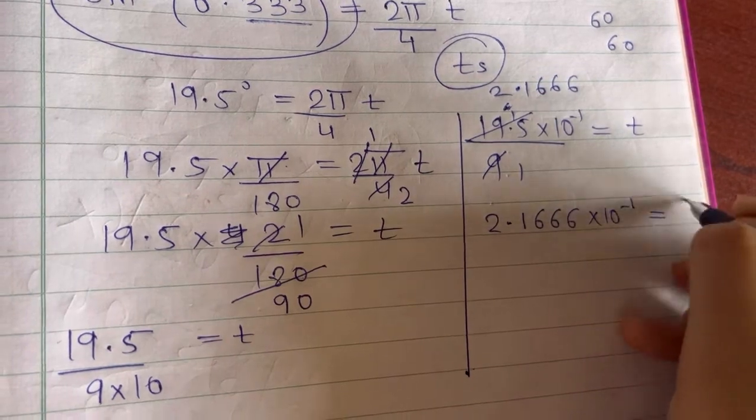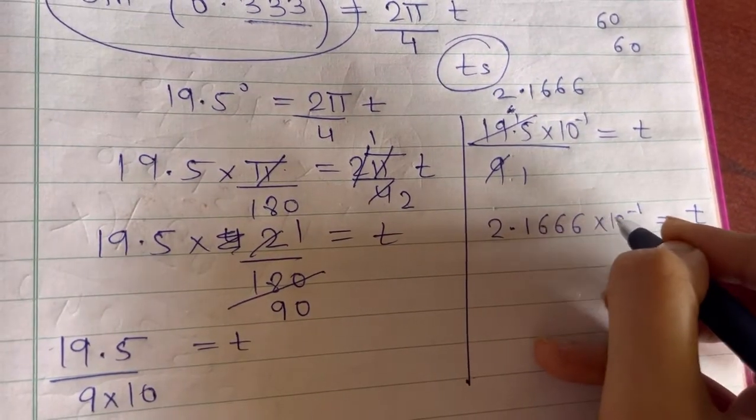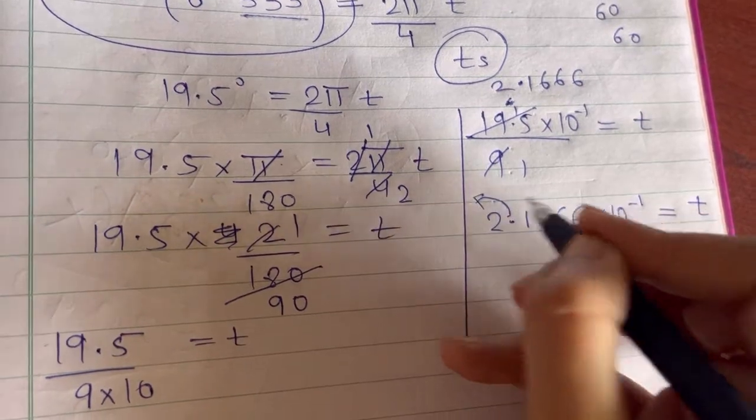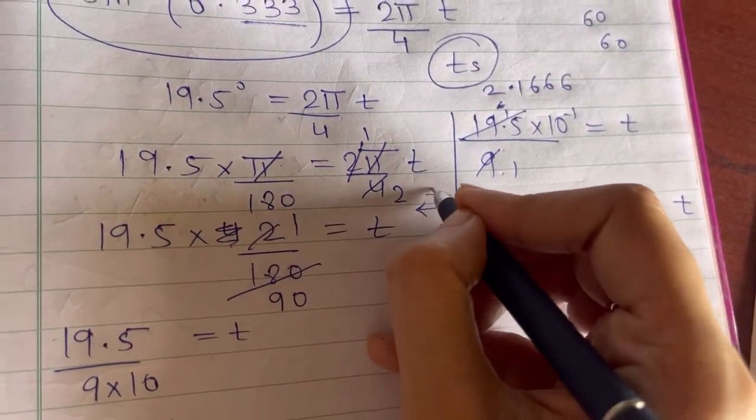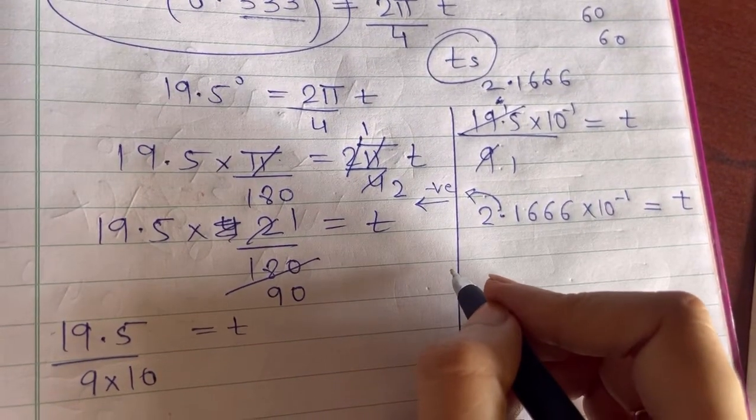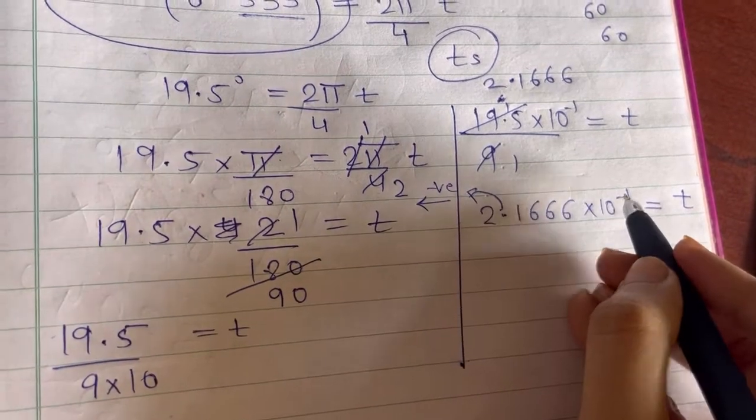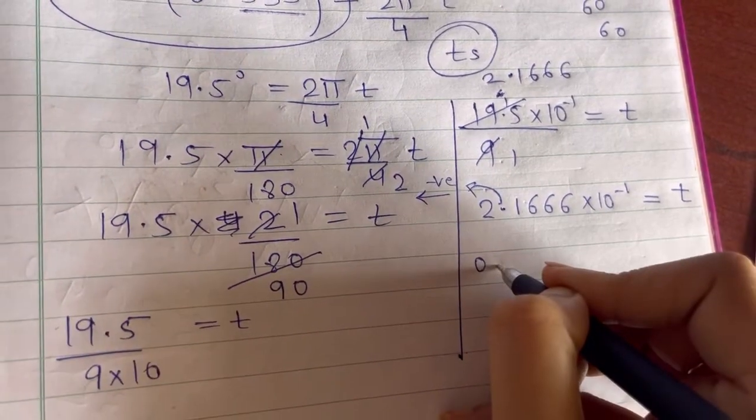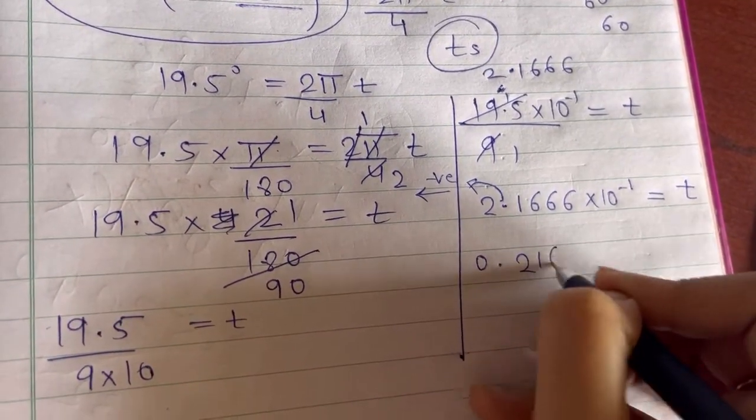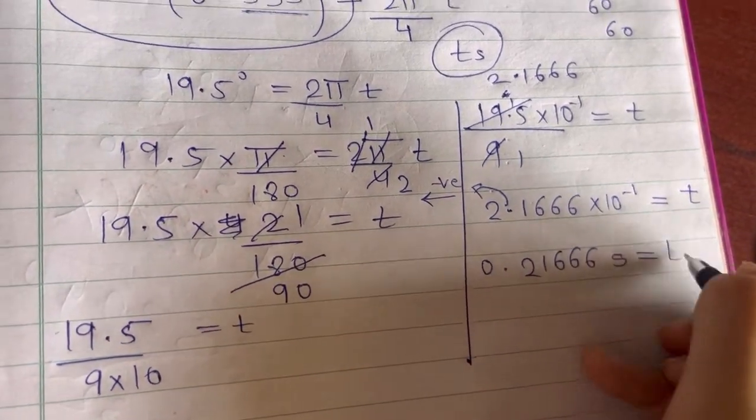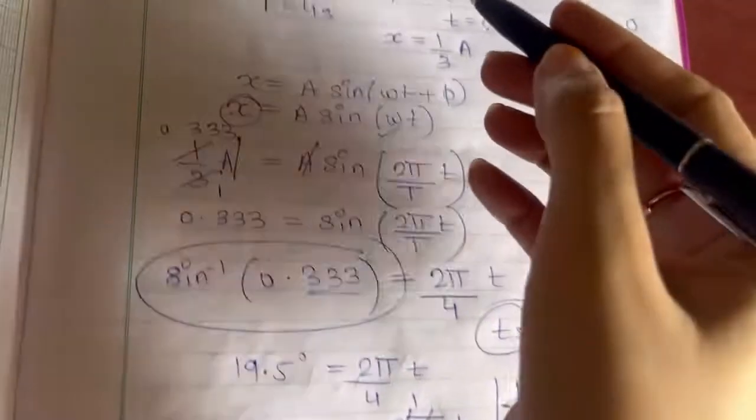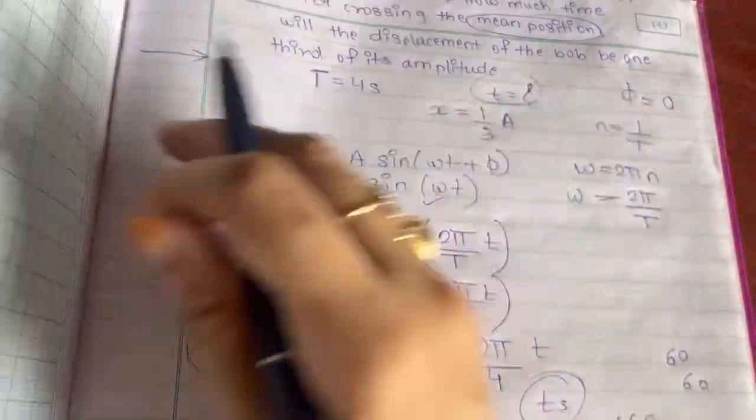Now if you multiply this 10 raised to minus 1 in this digit, the point will of course shift towards this side. Because this side is of negative side of number line. So we are going to shift to 1 digit. So this becomes 0.21666 seconds is equal to the time which we were asked to calculate.